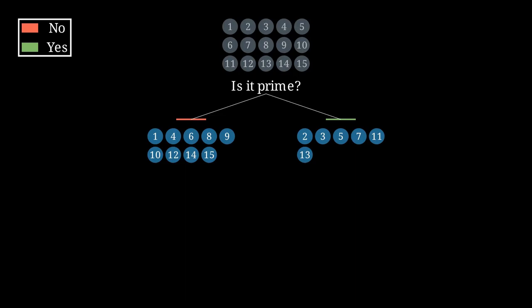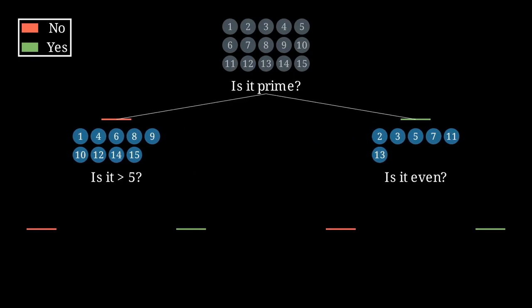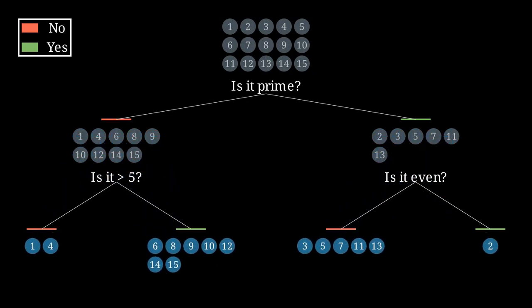Of course, now we have to decide on a second question to ask. Since each possibility leaves us with different discovered information, we might want to ask a different question for each case. Each of these questions splits the possibilities again. So after moving our numbered balls, we see that we will find ourselves in one of four possibilities after two questions.